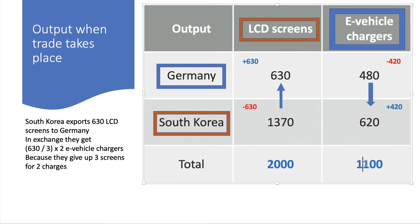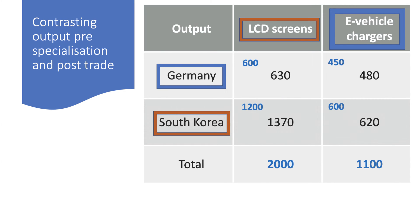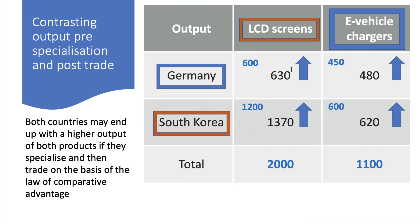Let's make sure these numbers add up — that should be 1,100, and it does. This should be 2,000, and it does. There's more than one answer but this seems to work. Comparing pre-specialization and post-trade: 630 is bigger than 600, 480 is bigger than 450, 620 is bigger than 600, and 1,370 is bigger than 1,200. The trade seems to have benefited South Korea a little bit more, but both countries have benefited. They've ended up with more LCD screens and more vehicle chargers than they had before, with no more resources — just trading on the basis of specialization and comparative advantage.